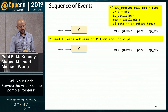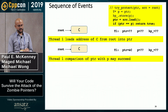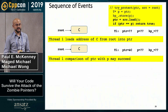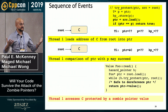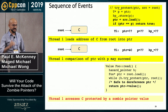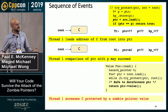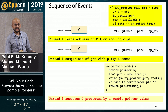Thread one goes back to user code and calls the hazard pointer library. So it's already a zombie before calling the library. In the library try_protect code, it reads the value from PTR to a local variable P. Who knows what value it gets? In current implementations it's still valid, but that's because compilers aren't as aggressive as they're allowed to be by the C and C++ standards.